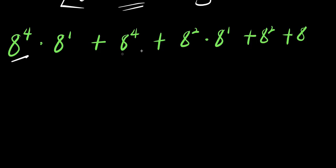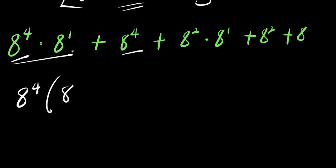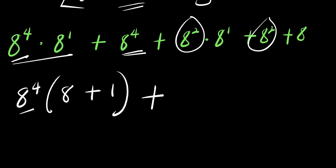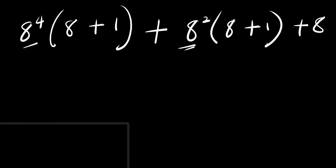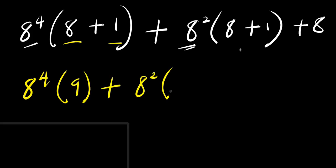Now I can factor out a^4 from the first two terms: a^4 times (a^1 + 1), which is a^4 times (8 + 1). Similarly, I factor out a^2 from the next two terms: a^2 times (a^1 + 1), which is a^2 times (8 + 1). So we have a^4 times 9, plus a^2 times 9, plus 8.